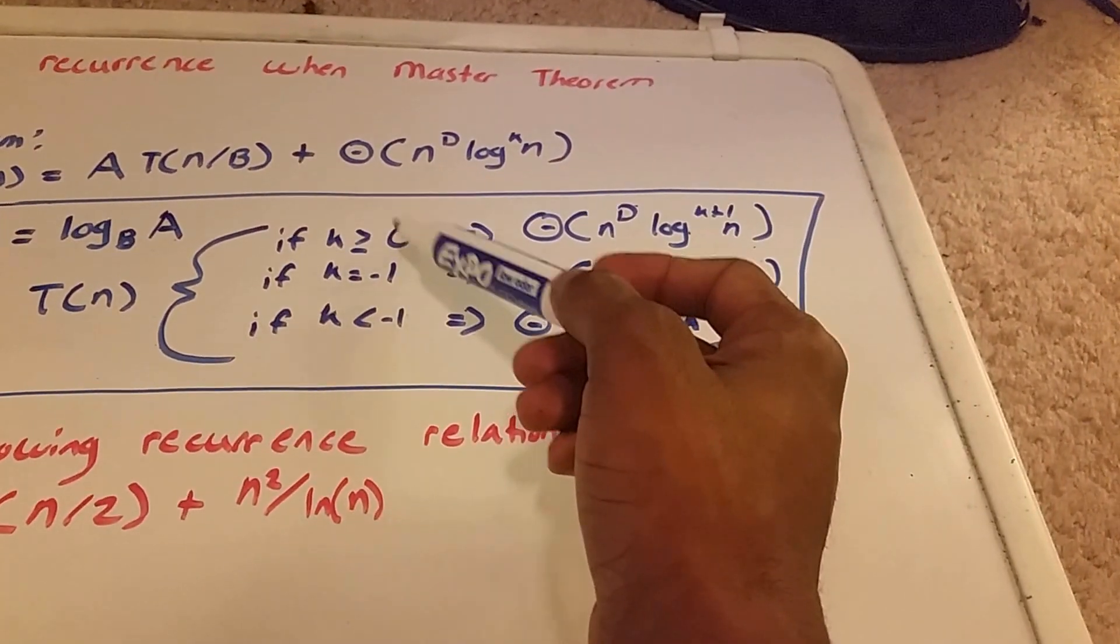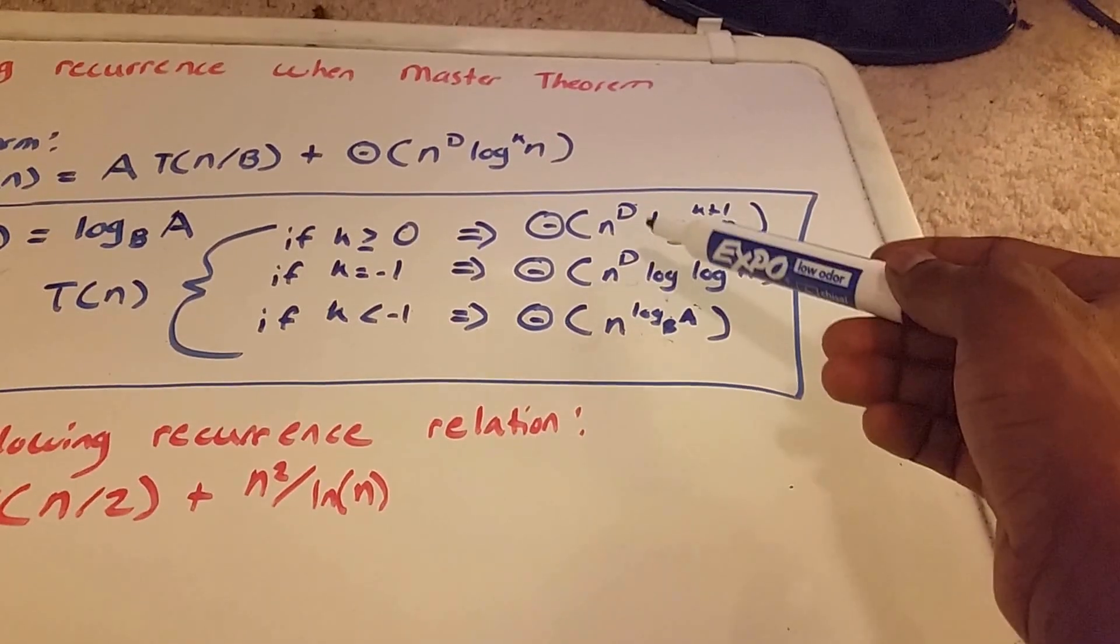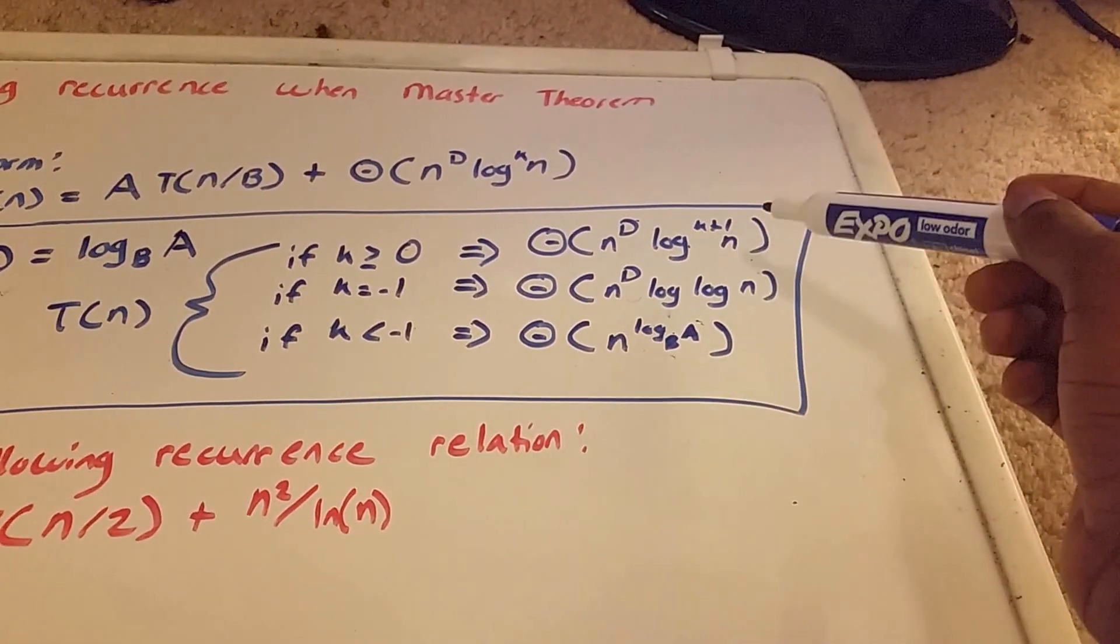If k is greater than or equal to 0, if k is equal to negative 1, then T(n) is Θ(n^D·log(log(n))).